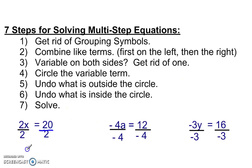20 divided by 2. This cancels out. x equals 10. Negative 4 divided by negative 4 cancels out. a equals negative 3, because a positive divided by negative is a negative.